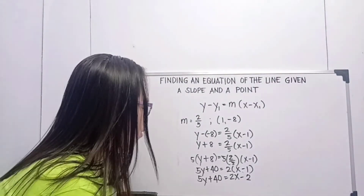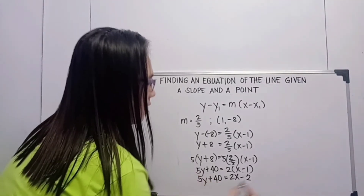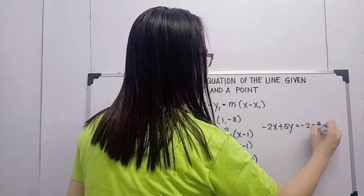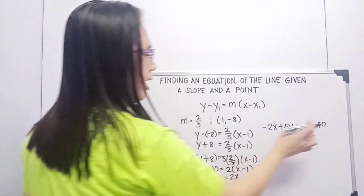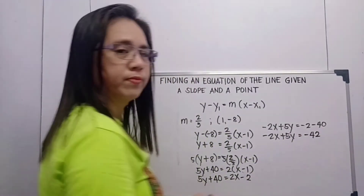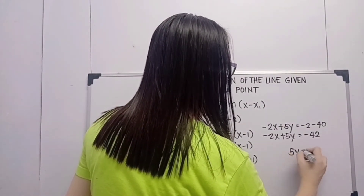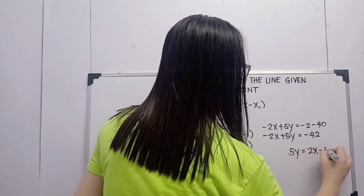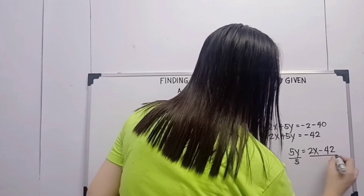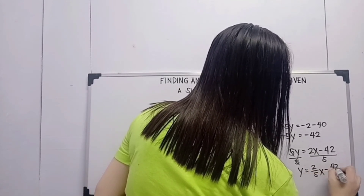Now, what will be our standard form? We move negative 2x to the left side, so this will become negative 2x plus 5y is equal to negative 2 minus 40. The positive 40 becomes negative 40. So this becomes negative 2x plus 5y is equal to negative 42. That is our standard form. The slope-intercept form: 5y is equal to 2x minus 42. But that is not yet slope-intercept form because of the 5. We divide both sides by 5, so this becomes y is equal to 2x minus 42 over 5.